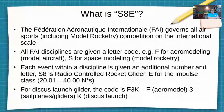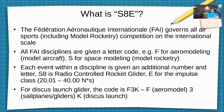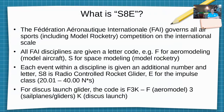First off, what is S8E? The Fédération Aéronautique Internationale, or FAI, governs all air sport including model rocketry on the international scale. Every FAI discipline is given a letter code — the two we're most interested in are F for aeromodeling or model airplanes, and S for space modeling or model rocketry. Within each discipline, each event is given an additional number and letter. S8 is radio controlled rocket glider, and E stands for the standard E impulse class. For reference, discus launch glider is F3K — F for aeromodels, 3 for sailplanes or gliders, and K for discus launch.